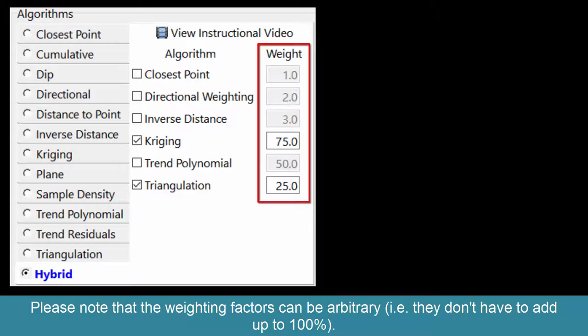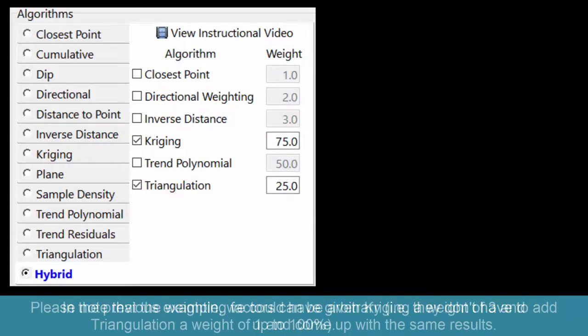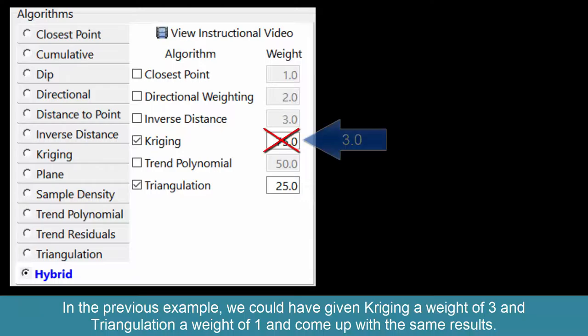For example, they don't have to add up to 100%. In the previous example, we could have given Kriging a weight of 3 and Triangulation a weight of 1 and come up with the same results.